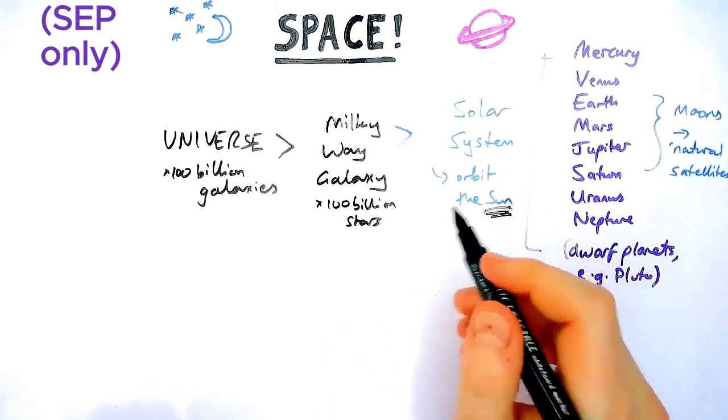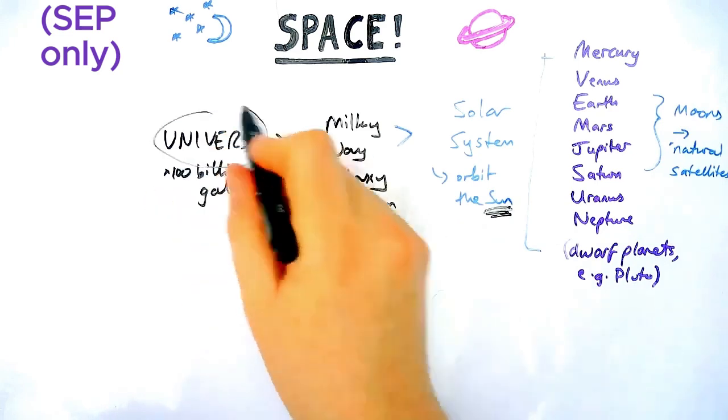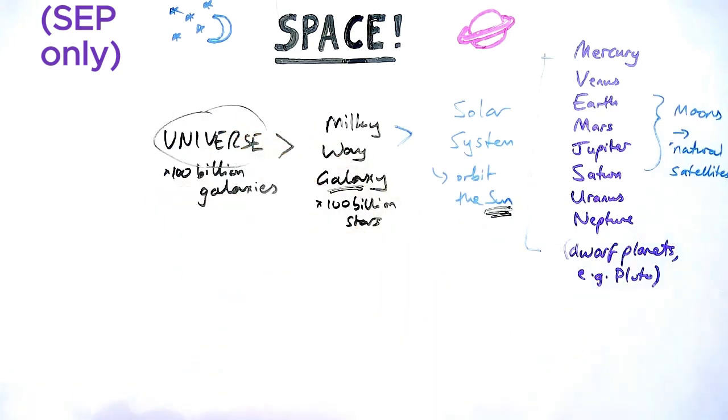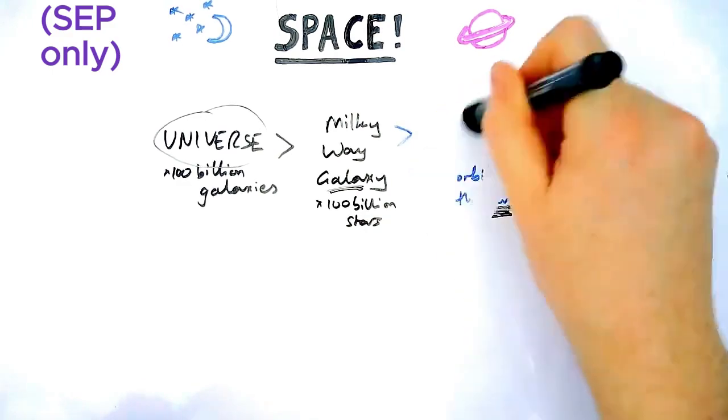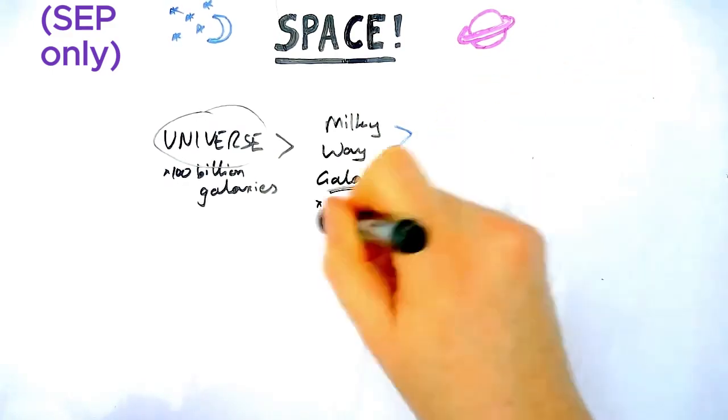But it's a really common mistake to talk about the wrong thing. So when we're talking about the universe, that's the Big Bang. When we're talking about planets, that's our solar system. And we'll come on to it later when you might want to talk about galaxies in the context of evidence for the Big Bang.